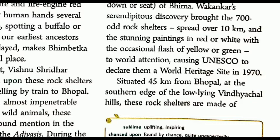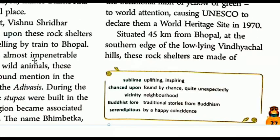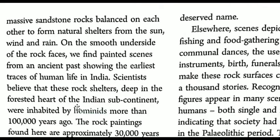Bhimbetka was declared a World Heritage Site in 1970. It is situated 45 km from Bhopal at the southern edge of the low-lying Vindhyachal hills. These rock shelters are made of massive sandstone rocks balanced on each other to form natural shelters from the sun, wind, and rain. On the smooth underside of the rock faces, we find the painted scenes from an ancient past.